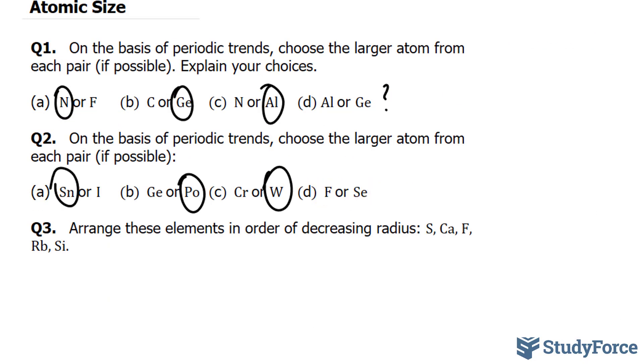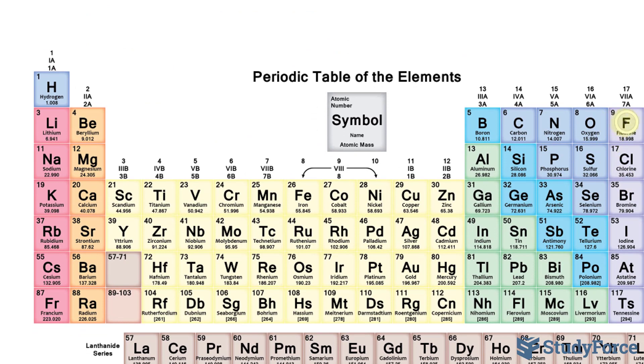Finally, fluorine versus selenium. Fluorine is right here, and selenium is two columns below and to the left. Given that selenium is at a higher principal quantum number, we can assume that selenium is larger than fluorine.